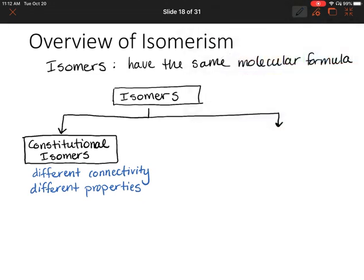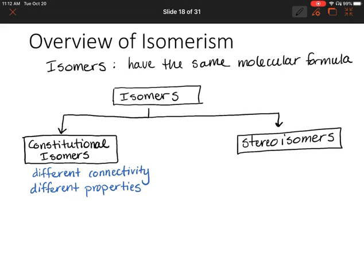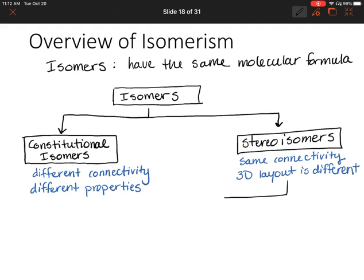The other category under isomers is stereoisomers. Stereoisomers have the same connectivity, but the three-dimensional layout is different. There are two different ways that the three-dimensional layout could be different, so there's a further part of our flowchart. We can have what are called enantiomers or diastereomers.